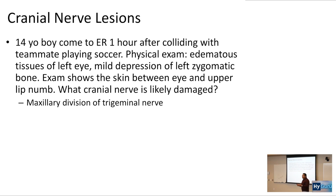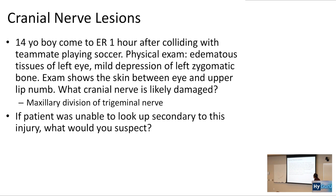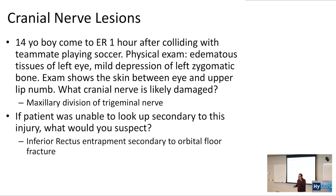That is going to be the maxillary division of the trigeminal nerve — V2 is a sensory nerve in that distribution near the upper lip. If the patient was unable to look up secondary to this injury, you'd be worried about the inferior rectus muscle getting entrapped in the zygomatic bone. This is secondary to an orbital floor fracture — on CT they can show the fractured bone and the muscle right next to it.